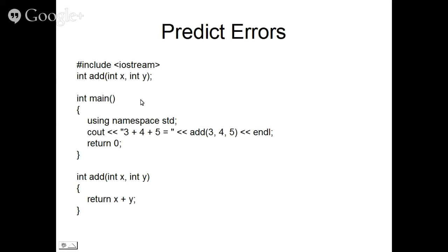So there are some predict error problems here which will make things clear, because we always understand very nicely when we know what kind of errors come up. Okay, so you have a program here: 3 plus 4 plus 5, and you call add with these parameters, and this is the function defined. We have a forward declaration also. Still there is some error. Can you predict the error? Please pause the program, predict the error, and then proceed.